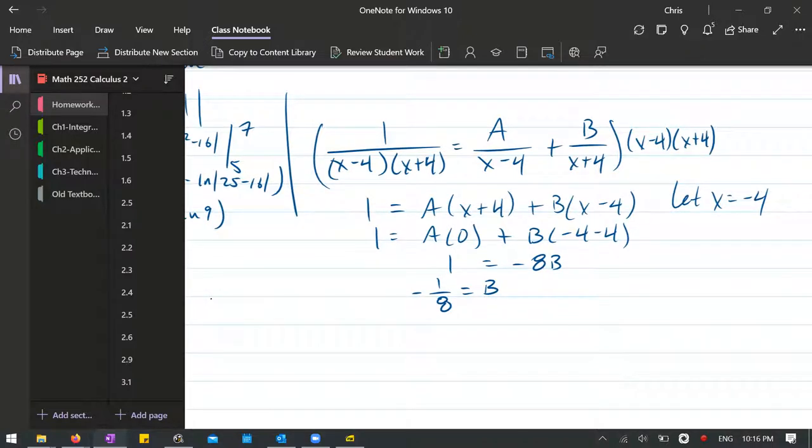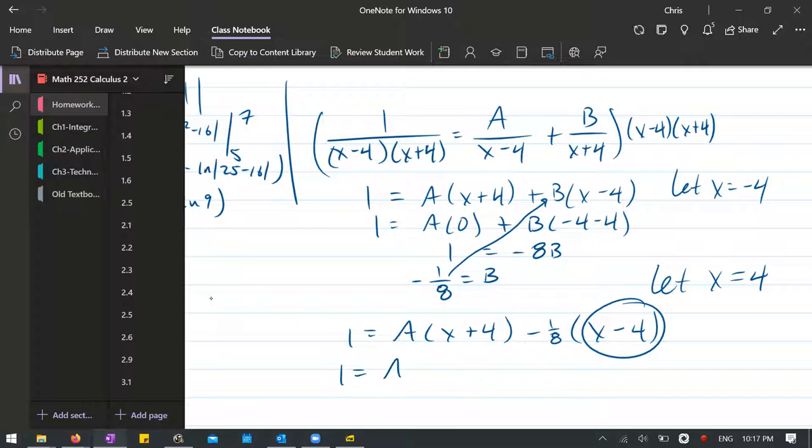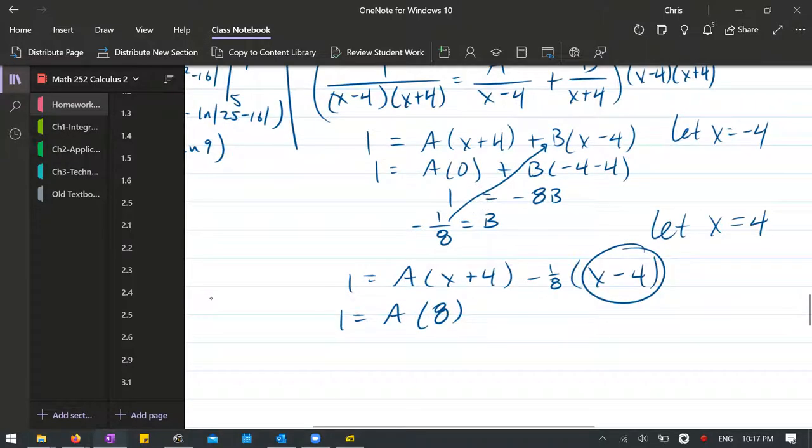We're going to plug that back in for b up at the original, up there. That's going to be a minus an eighth. So what's the smart value here? We're going to let x equal positive 4 now. It's going to cancel that out to 0. And we're going to have 1 equals a times 4 plus 4, a times 8. Divide by 8. 1 eighth equals a.